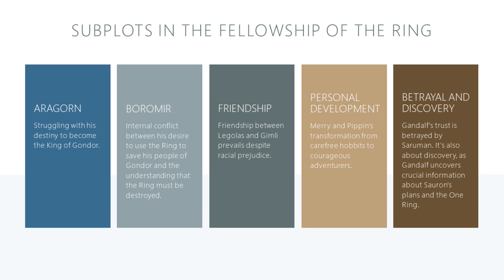On a lighter note, we also have the friendship between Legolas and Gimli. Their relationship begins with racial prejudice, but as they face challenges together, they grow to respect and eventually become friends. Another notable subplot involves Merry and Pippin, who begin as lighthearted, somewhat naive hobbits, primarily interested in mischief and fun. But as the story unfolds, they find themselves unexpectedly caught up in Frodo's quest. This subplot traces their journey from carefree hobbits to courageous adventurers, highlighting the theme of growth and the unexpected depth of character.